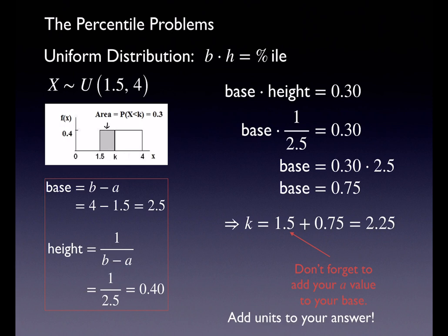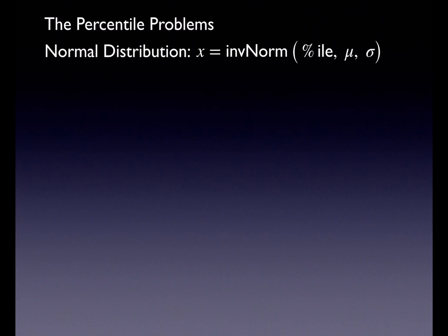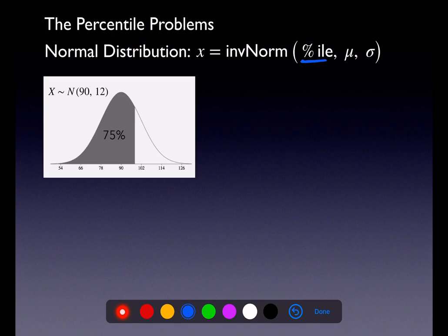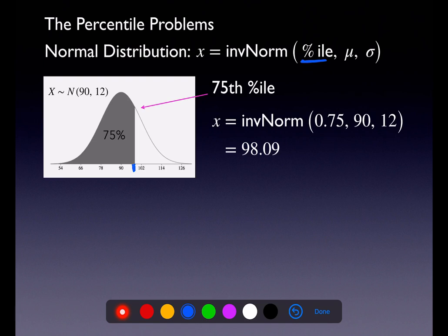Now let's look at percentile problems with inverse norm. On either the standard normal or a regular normal curve, use inverse norm — but you need a percentile. For example, to find the X value at the 75th percentile, plug 0.75 into inverse norm and you get 98.09. Graphically that seems right given the distribution spans from about 90 to 102, so 98.09 is a reasonable answer.